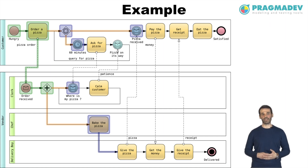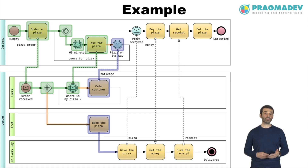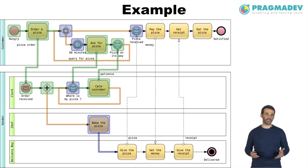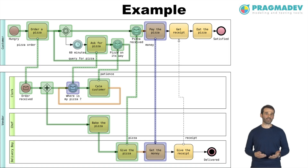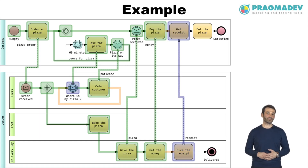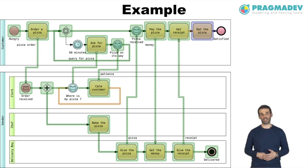Let's make the customer complain. The clerk tries to calm the customer by reassuring him that the pizza will arrive soon. The pizza is now ready and can be delivered to the customer. The customer receives the pizza, pays, gets the receipt, and finally eats the pizza — feeling satisfied.